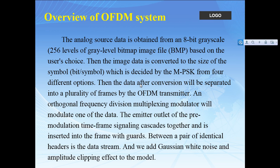The analog source data is obtained from an 8-bit grayscale bitmap image file, like BMP or JPEG, based on user choice. The image data is converted to a size of symbols — a matrix — decided by the MPSK format, with four different options. The emitter assembles the pre-modulation time frame signals together, inserting them into the frame with guard intervals and identical headers in the data stream. Some noise is added to the model to make it more realistic and practical.